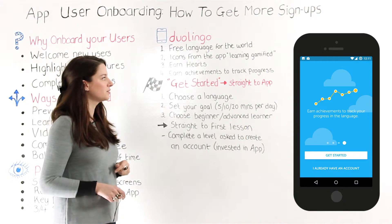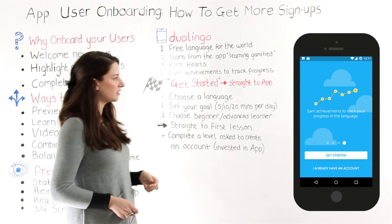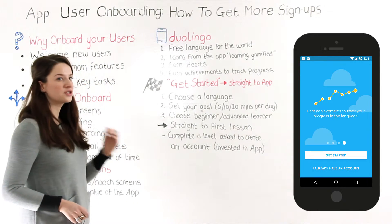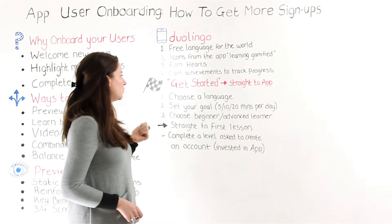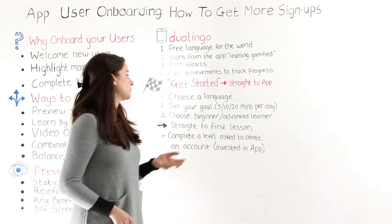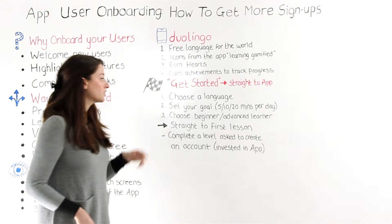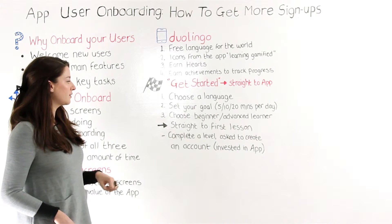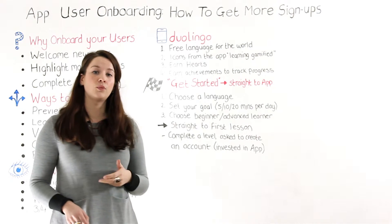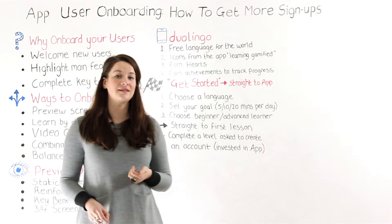If you tap the "Get Started" button, it takes you into a learn-by-doing kind of onboarding — we'll go into more detail on that in another video. But tapping "Get Started" takes you straight into the app: you can choose the language you want to learn, set your goals for 5, 10, or 20 minutes per day, and choose your path depending on whether you're a beginner or an advanced learner. You're then straight into your first lesson learning a new language. And it's only when you complete a level that Duolingo asks if you'd like to sign up — which is really clever, because you're quite invested in the app at that stage.